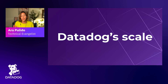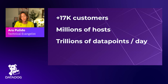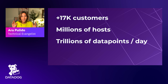We usually start this episode by talking a little bit about Datadog's scale, because some of the decisions we make while building Datadog are related to that scale. Datadog has more than 70,000 customers. Being a monitoring platform, we gather telemetry from those customers — millions of hosts that translate into trillions of data points per day that we need to process.